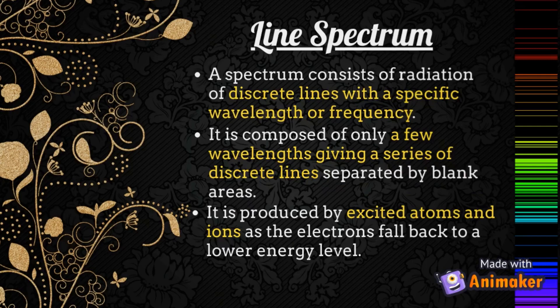A line spectrum is a spectrum that consists of radiation of discrete lines with a specific wavelength or frequency. It is composed of only a few wavelengths, giving a series of discrete lines separated by blank areas.